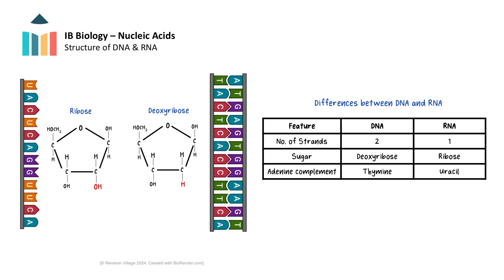Looking at the base pairs, we can compare the nitrogenous bases. DNA contains four nitrogenous bases: adenine, thymine, cytosine, and guanine. The complementary base pairing is critical for the accurate replication and transcription of genetic information. RNA also contains four nitrogenous bases, but with a key difference — uracil is used instead of thymine.